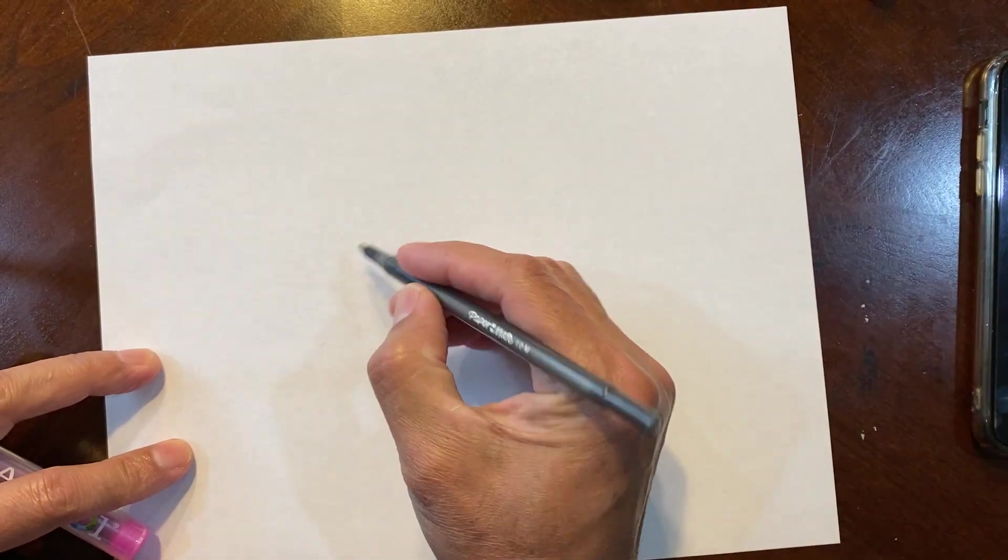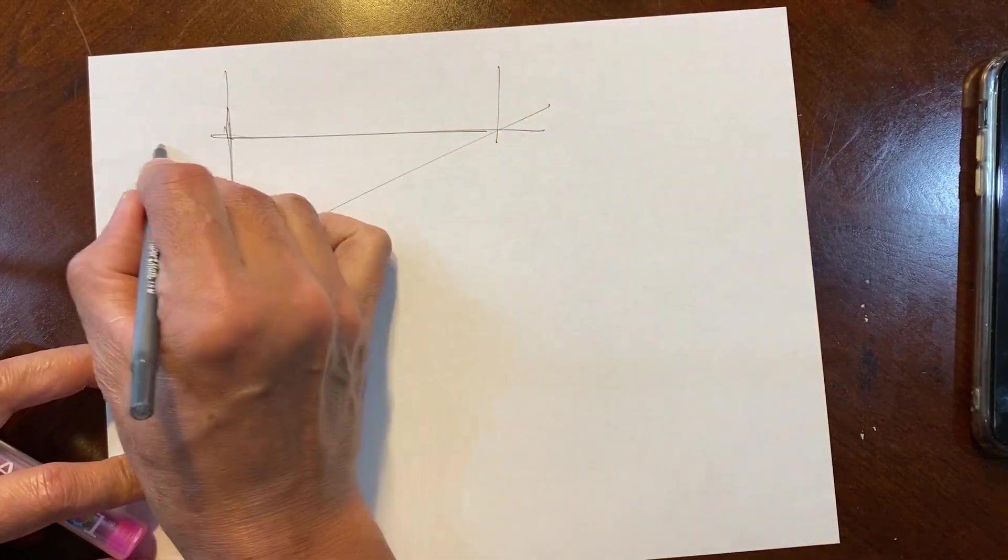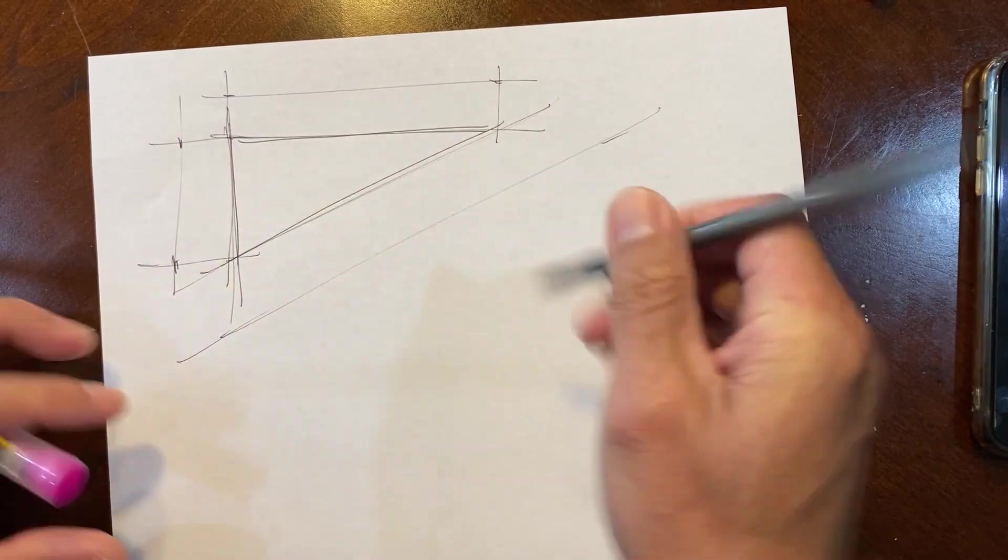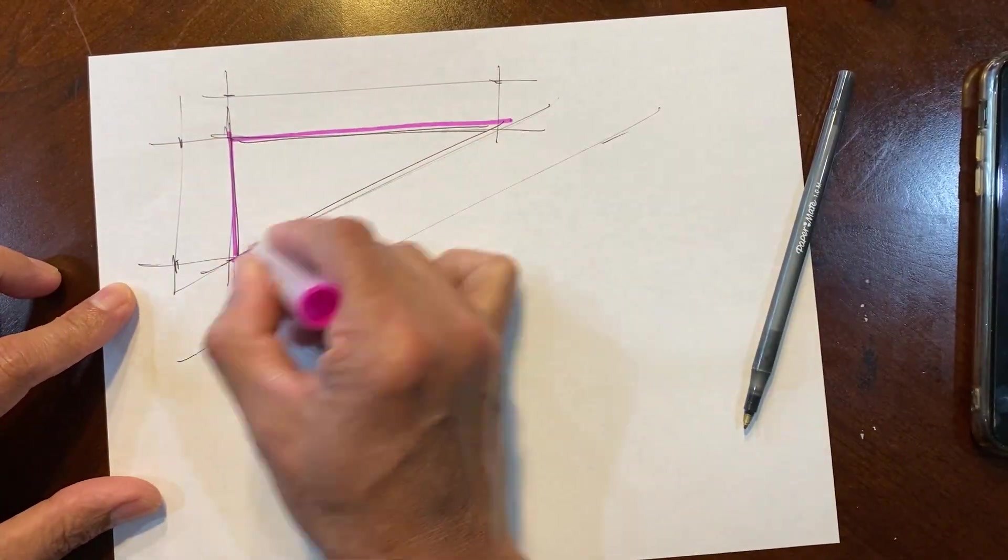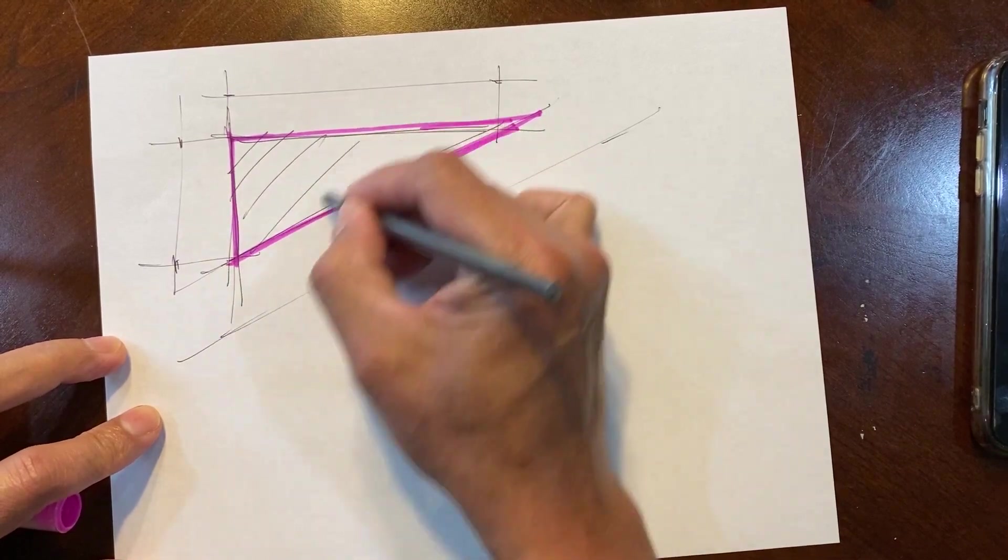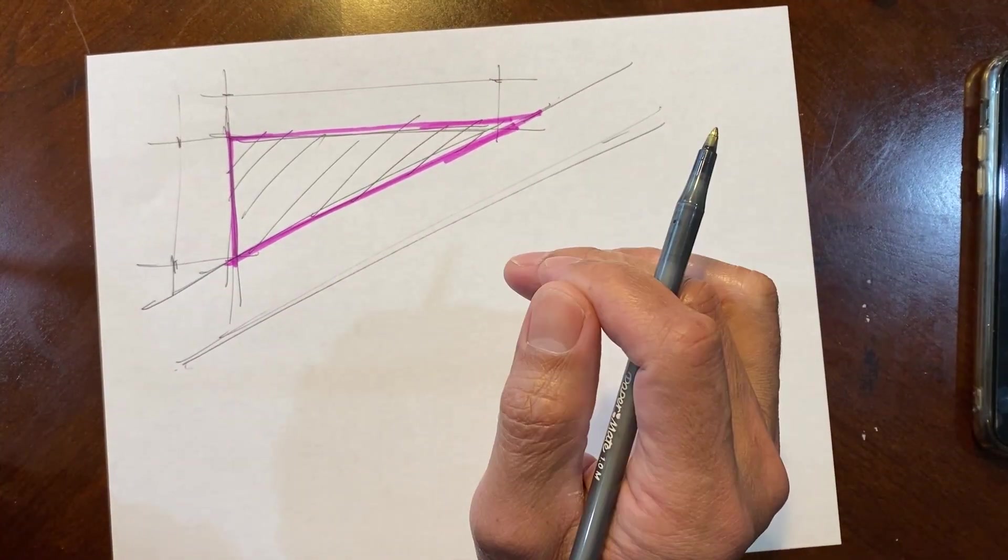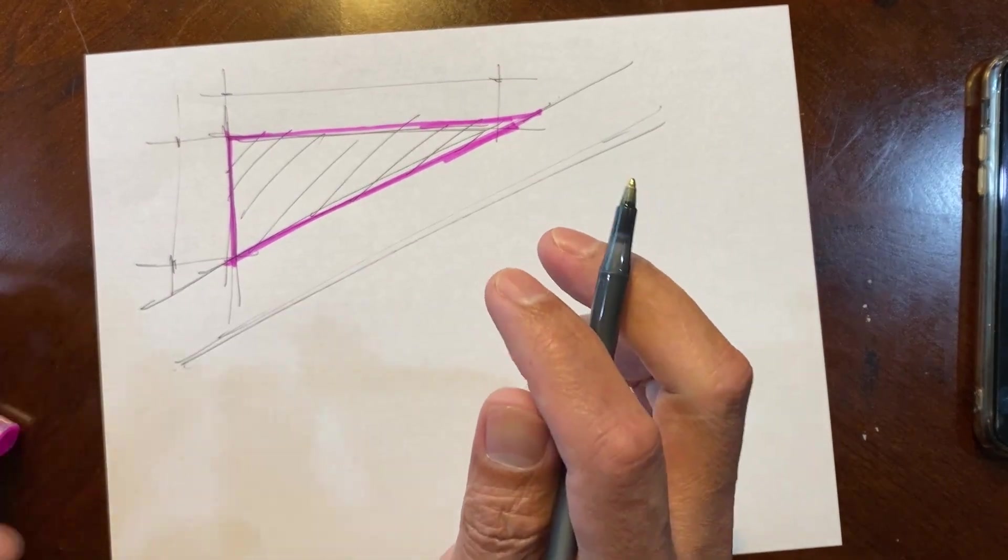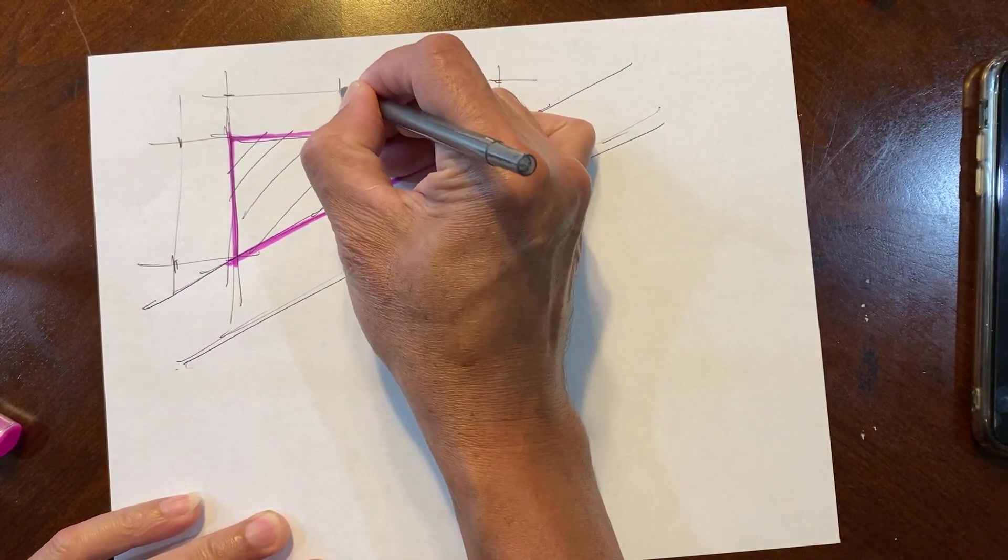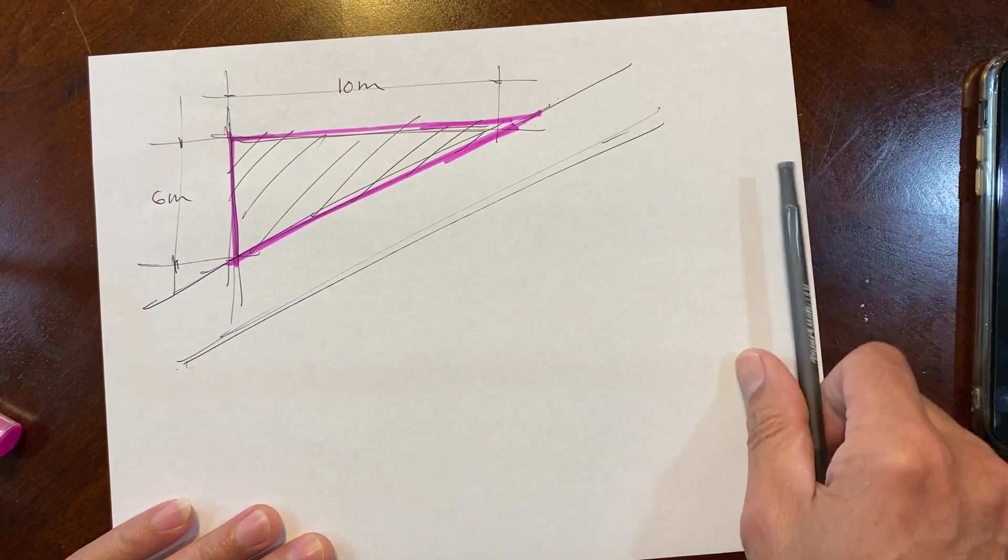Let's go to another shape. Let's see, we have a shape of a triangle. This is very simple. That's your lot and this is your road along the highway. How can you find the area of your lot on a triangular shape?